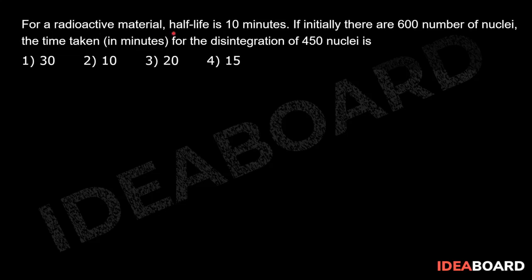For a radioactive material, the half-life is 10 minutes. If initially there are 600 nuclei, find the time in minutes taken for the disintegration of 450 nuclei.